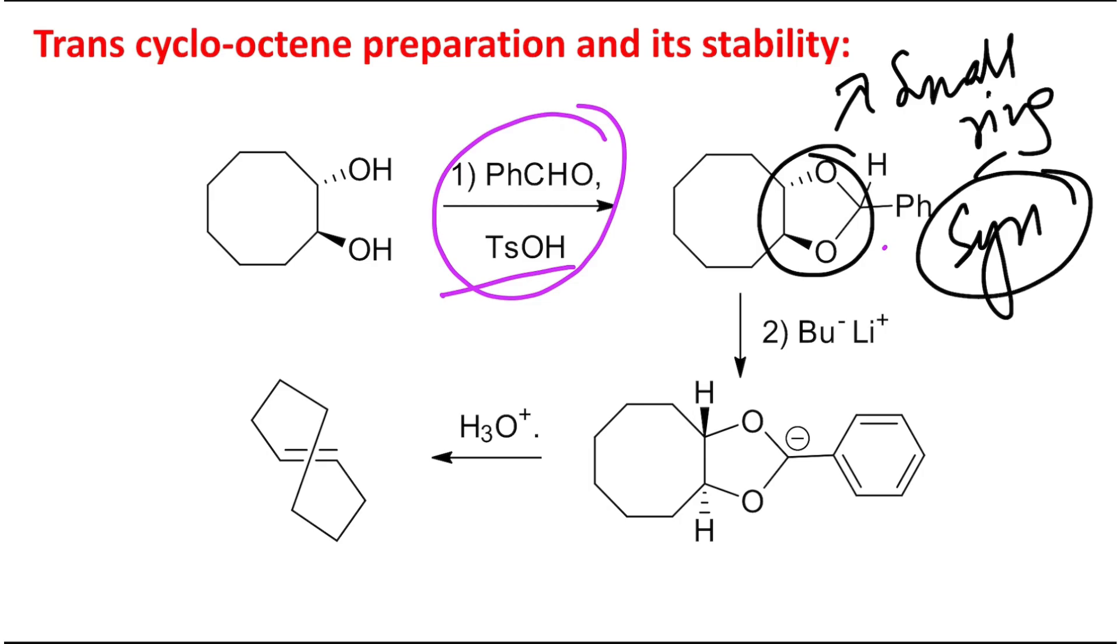Similar reaction pathway - this proton will be abstracted by butyl lithium. The benzylic carbanion which forms will subsequently produce this trans alkene, why? Because here the diol was trans diol.